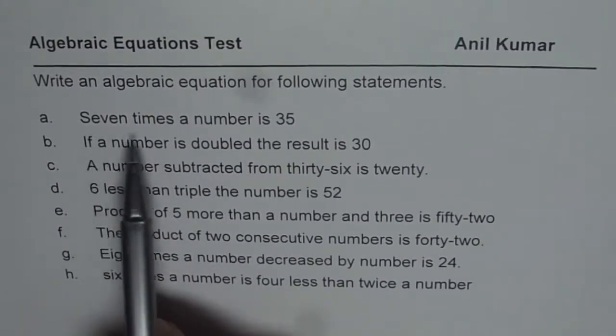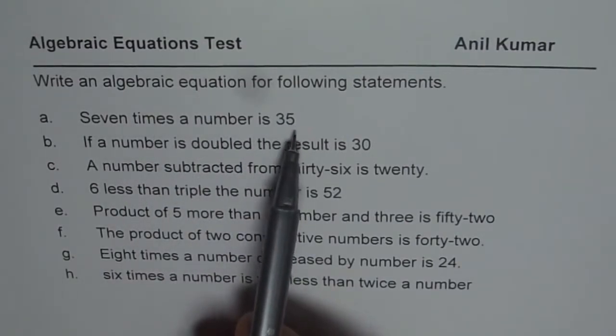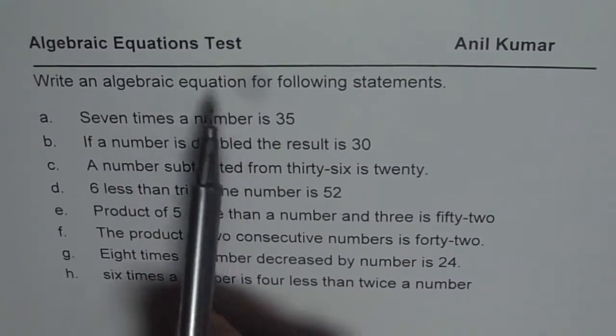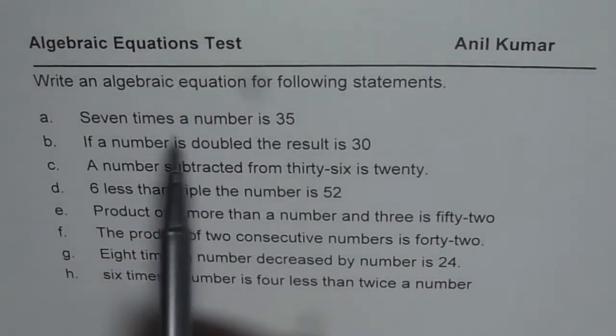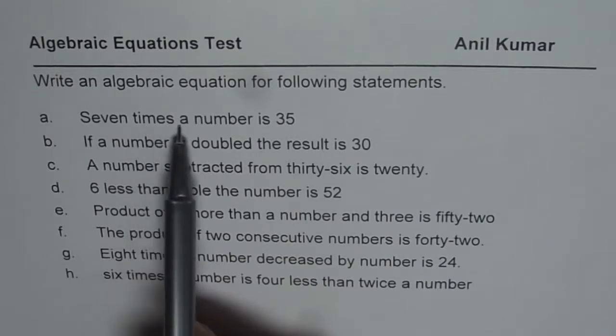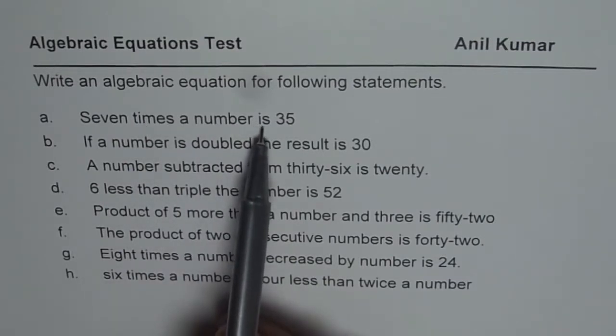The question here is, 7 times the number is 35. So you need to write an equation. Equation should have equal to sign. When we say 7 times the number is, is means equal to 35.